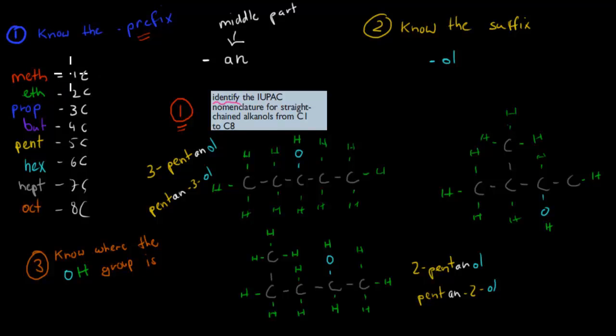We go from meth, which is 1 carbon, to oct, which is 8 carbons, everything in between. Then we add, for example, if we have two carbons, that's eth, then we add the AN in the middle, so ethane. And because it's an alkanol, that's an alcohol group, we'll always add the OL, so ethanol.